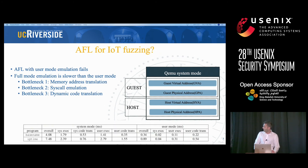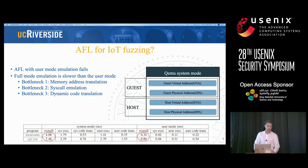Here you can see an example of our measurement for two programs — AFL with system mode emulation and with user mode emulation. As you can see, the execution time is 10 times more in system mode, meaning that the throughput would be 10 times less.